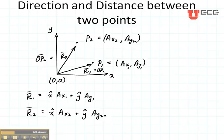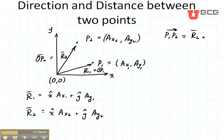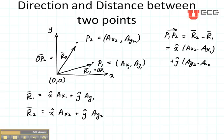Now if we want to find the distance between these two points or the direction between the two points, this is how we're going to do it. If we wanted to find a vector from point P1 to point P2 — that's what this little arrow means right here — this is going to be found by taking R2 minus R1. So that's going to be X-hat times (AX2 minus AX1) plus Y-hat times (AY2 minus AY1), and if there were a Z component, it would be AZ2 minus AZ1.